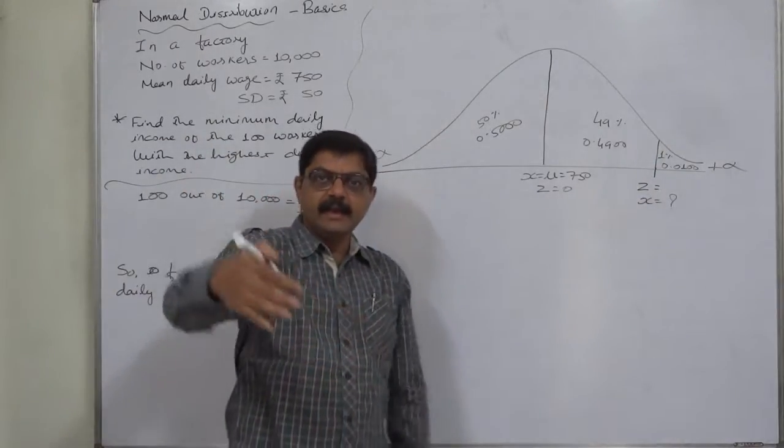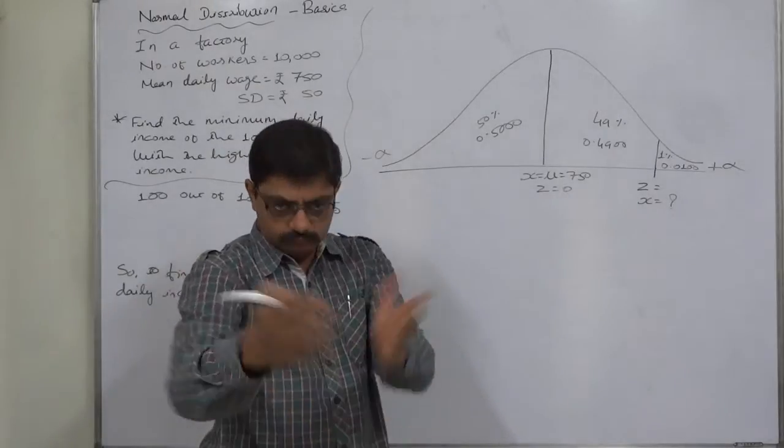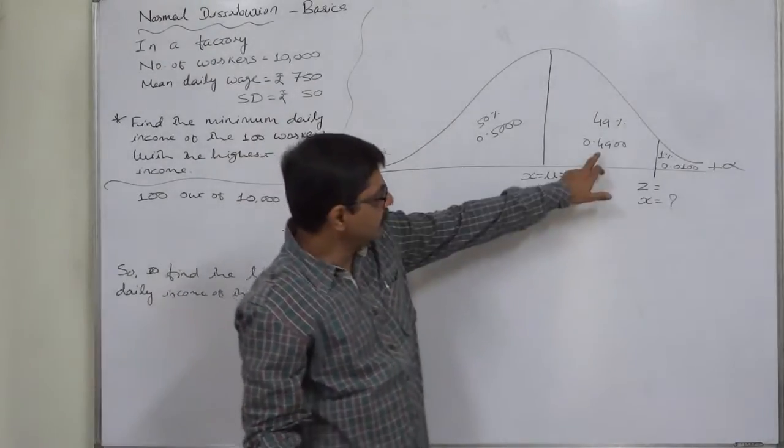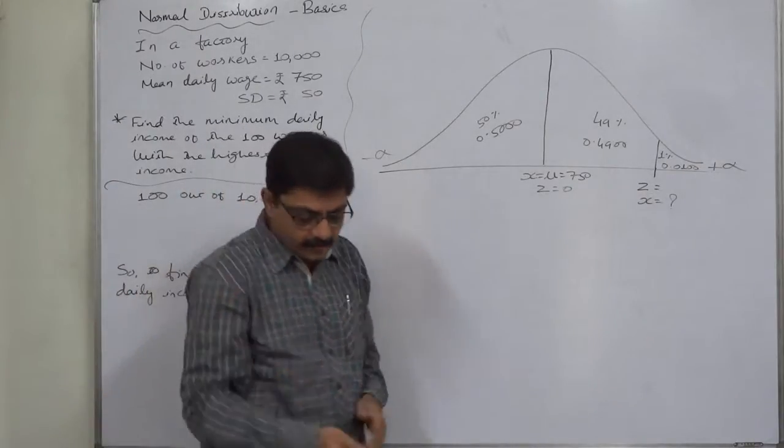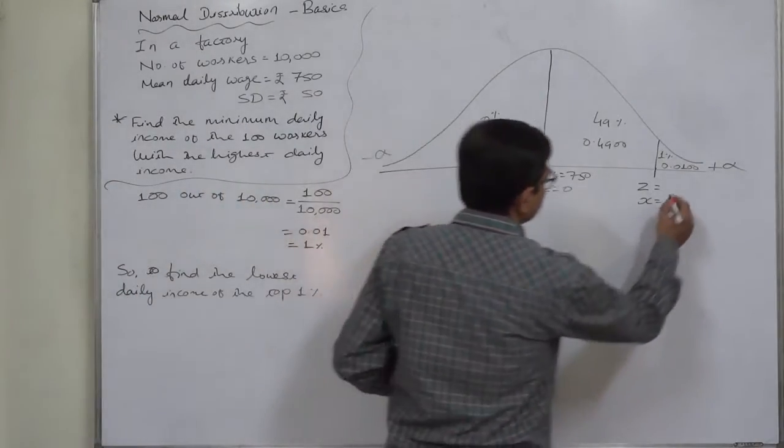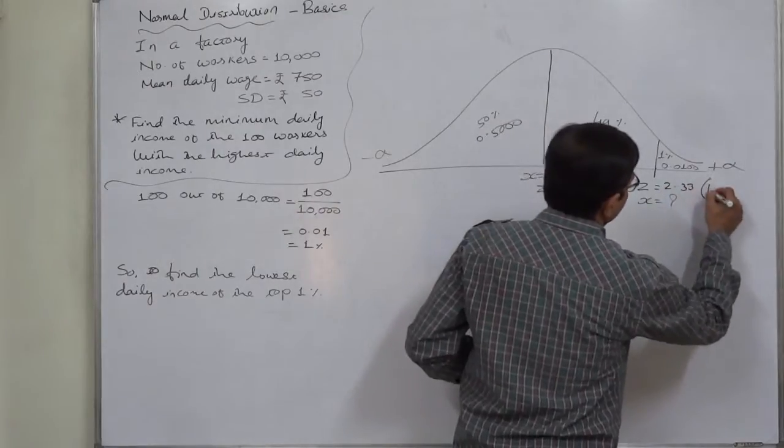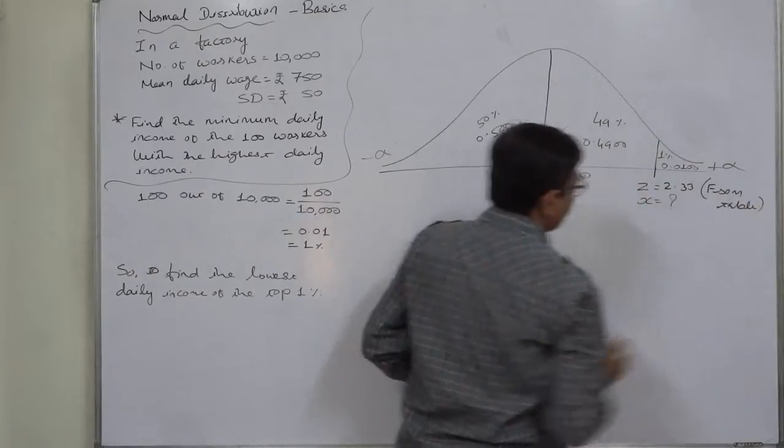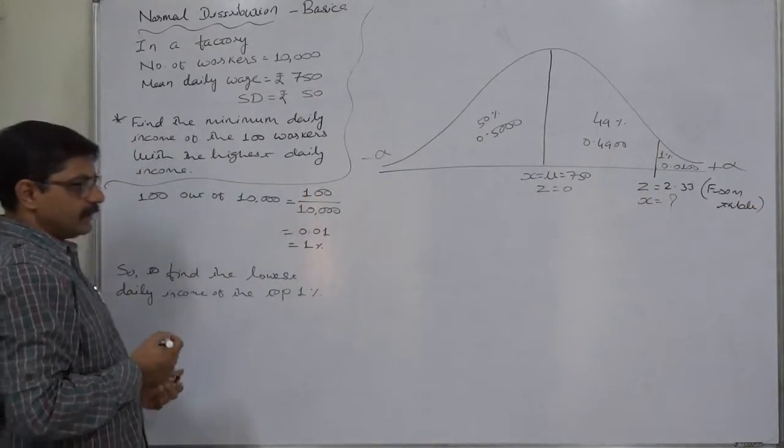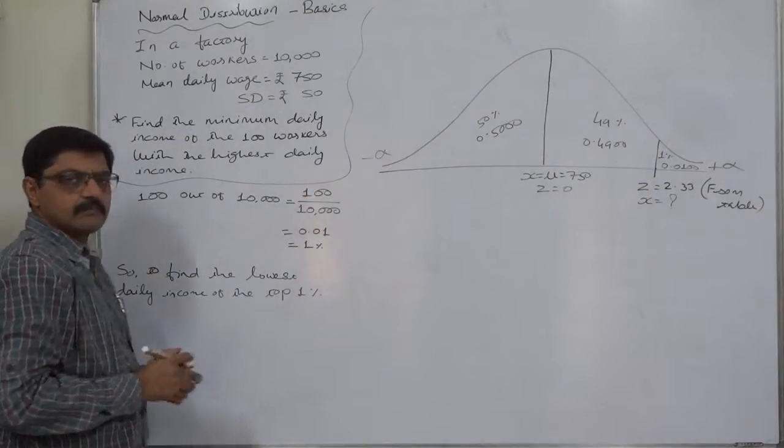Find the area in the normal table which is 0.49, then find the relevant value of Z, which comes to 2.33. We have taken this value from the table—this is one type of reverse calculation.